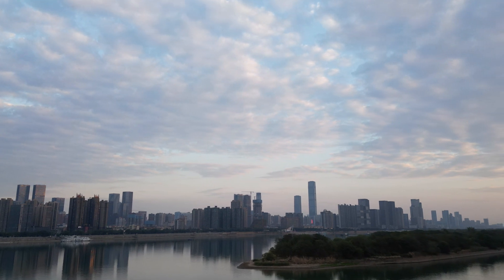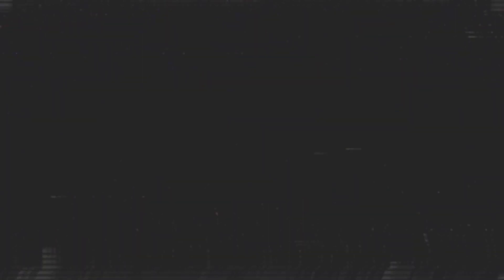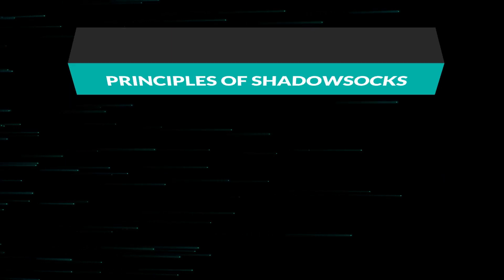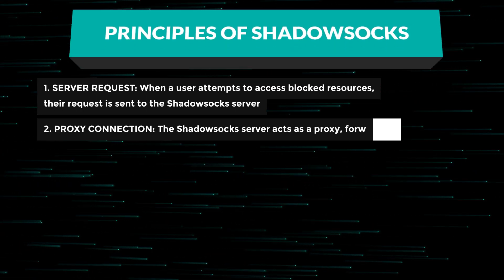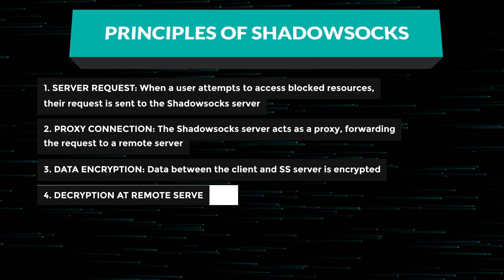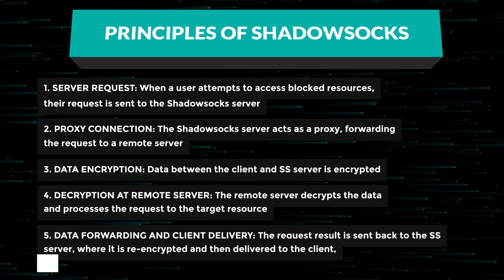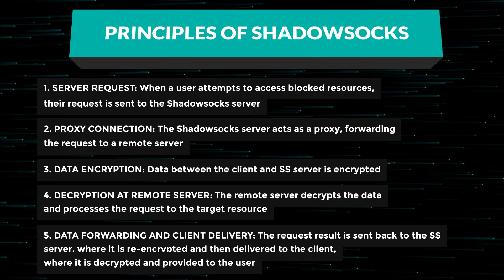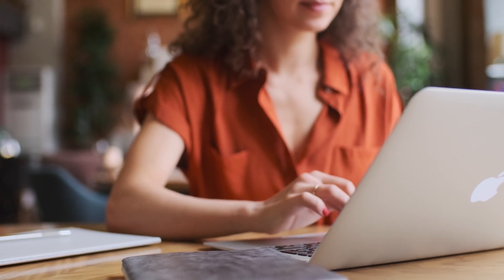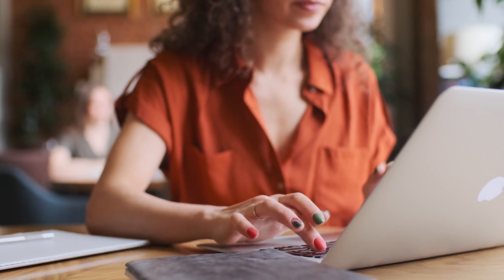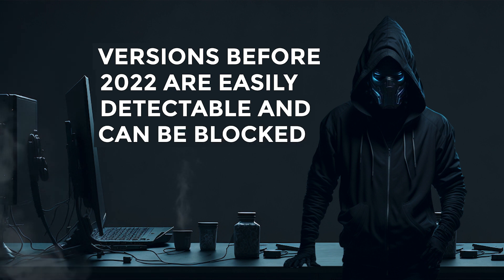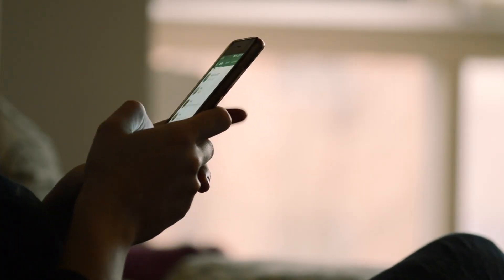This is where ShadowSocks technology comes into play. ShadowSocks is a proxy server technology used to bypass Internet censorship and enhance online anonymity. When you use ShadowSocks, your Internet traffic is routed through a remote server which encrypts all your data. This encrypted traffic is forwarded to the Internet, allowing you to circumvent blocks and filters. On the client side, your device decrypts the received data, enabling access to blocked websites while ensuring data security in public networks. However, old versions of ShadowSocks are still vulnerable to detection, and the new ShadowSocks 2022 protocol significantly improves this issue.